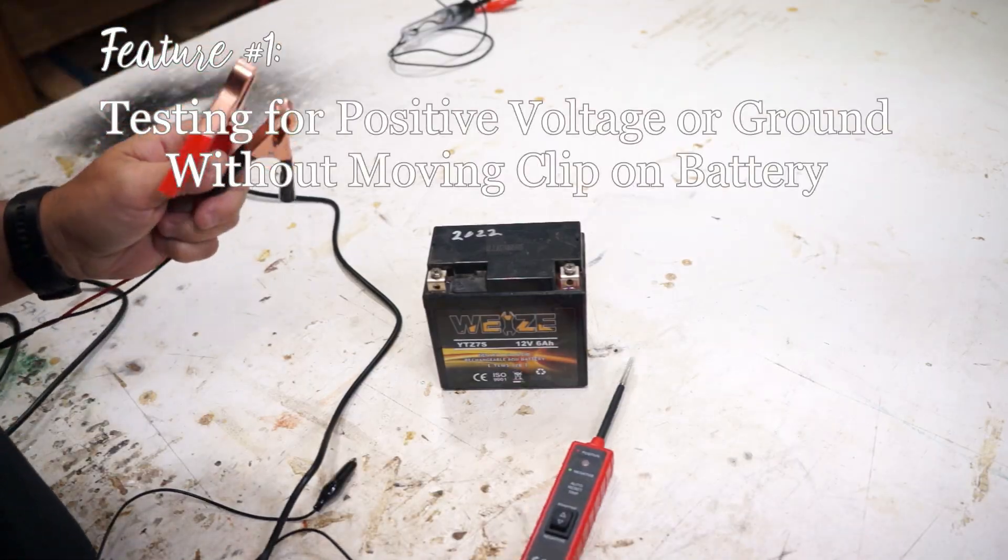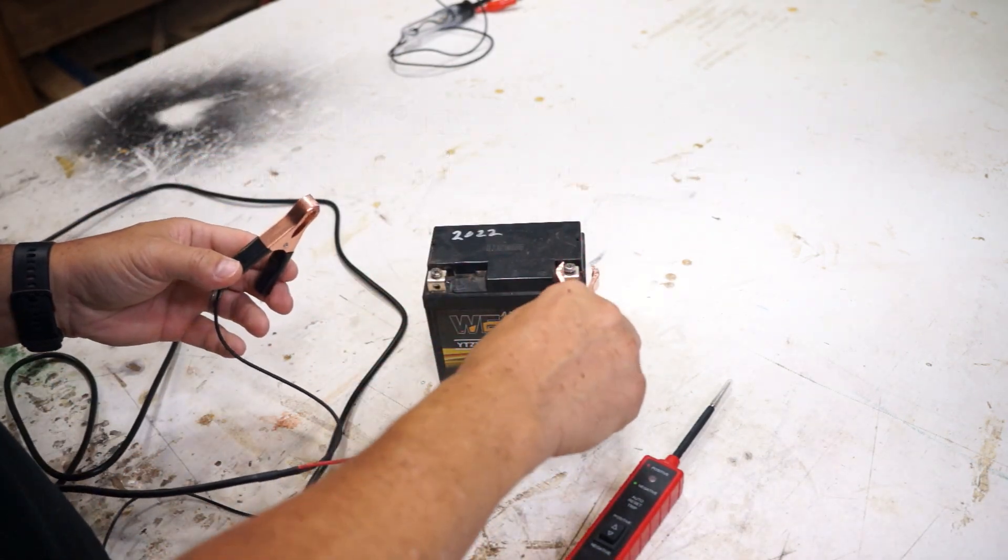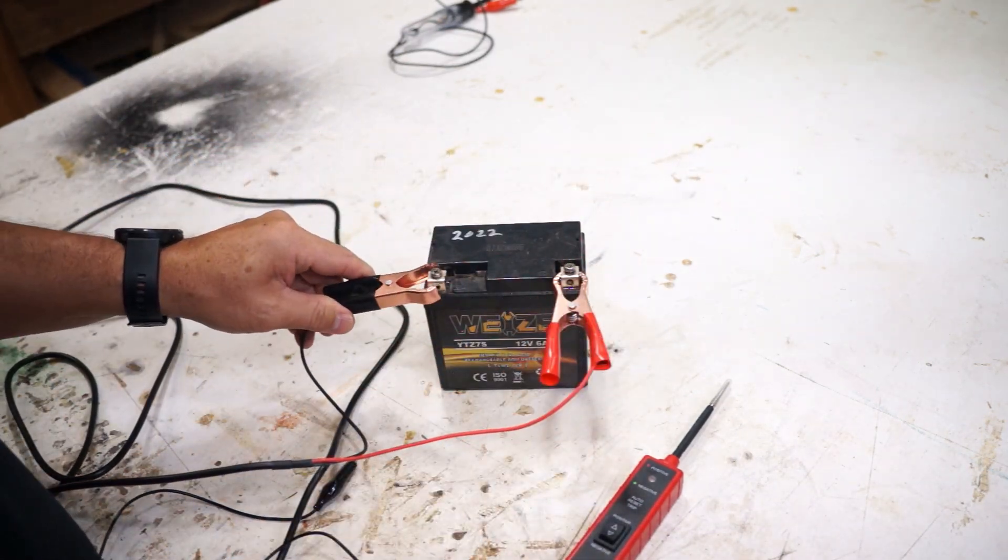So the first thing you do to set up your power probe, you just connect the positive clamp to the positive on the battery and the negative on the negative clamp.